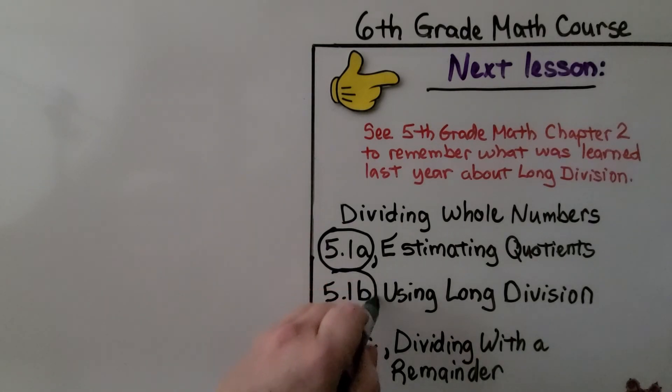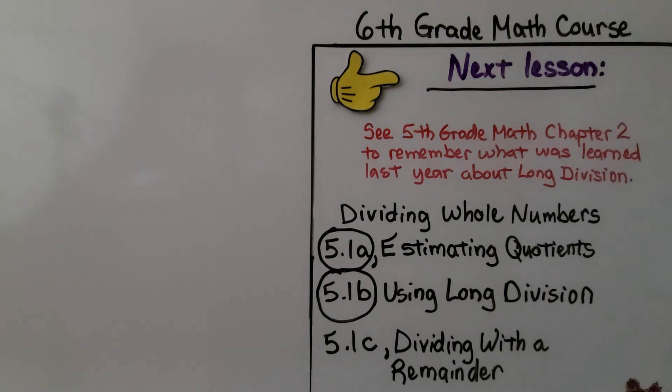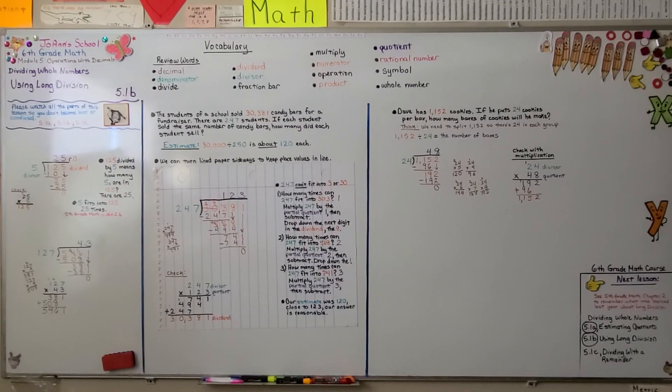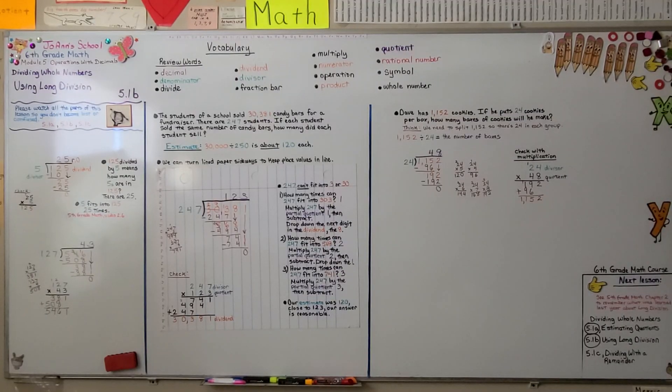So now we finished this lesson. We're going to move on to the last part of 5.1, 5.1c, and we're going to be dividing with a remainder. Now we did learn this in 5th grade math chapter 2. Don't ever feel bad about having to review something from a previous grade because we can't remember everything, especially if we haven't done it for a while. I want you to have a wonderful day. I want you to keep trying your best. And I'll see you next time. Bye.